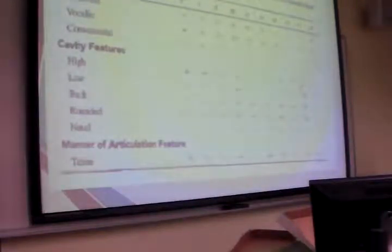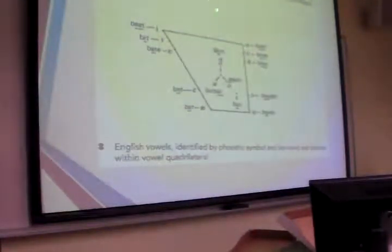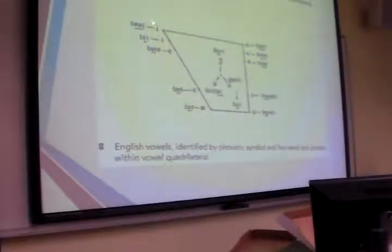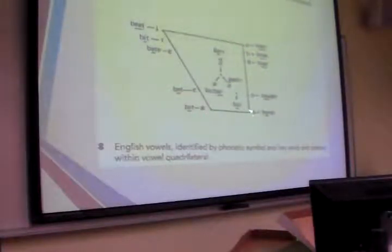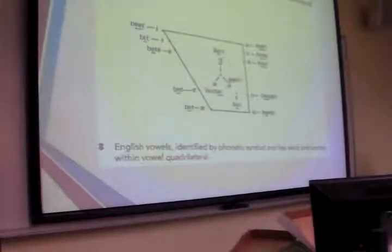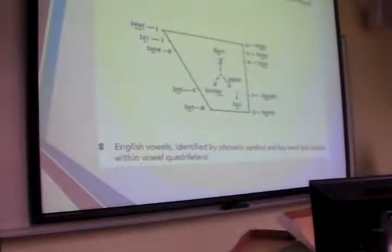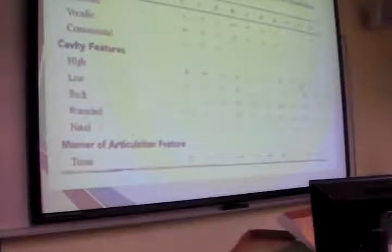Have you seen the vowel quadrilateral before? This is just a representation of the mouth. If you picture a profile — here's the nose and here's the mouth — this shows front high vowels, front low vowels, back high vowels, and back low vowels. It represents how the tongue moves in the mouth to produce these sounds, with some being more centralized. This is also the distinctive feature chart for vowels — the same kind of chart we reviewed for consonants applies to vowels as well.